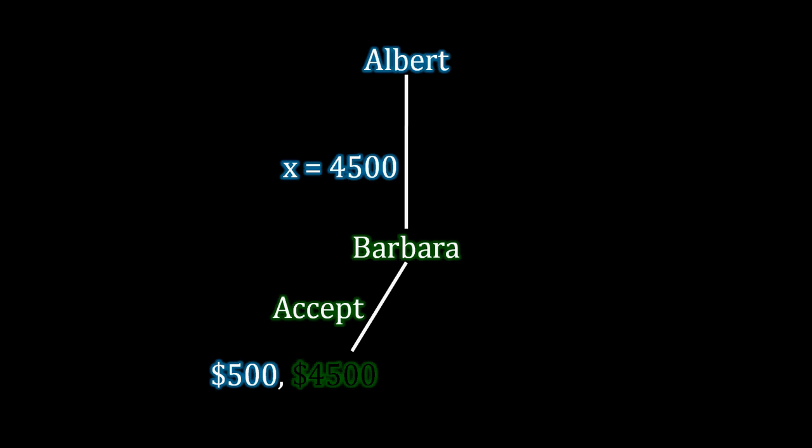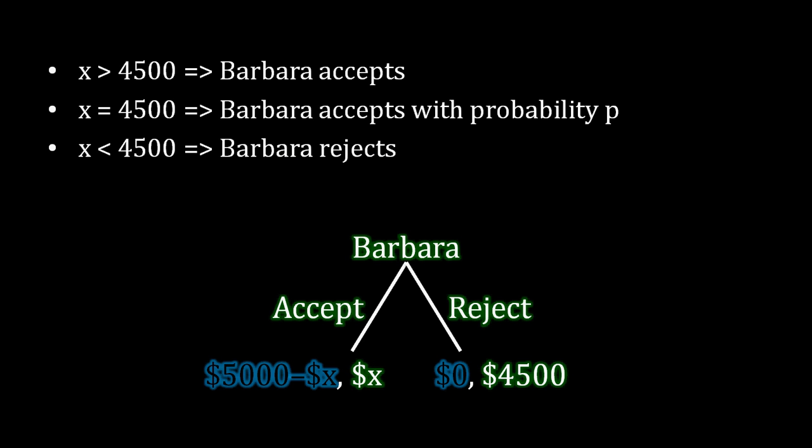Okay, that does not actually take care of everything, unfortunately. When x is exactly equal to $4,500, Barbara is indifferent, and indifference means that she's willing to do absolutely anything. So it might not be the case that she's accepting, and it might not be the case that she's rejecting. It might be the case that she's randomizing between accepting and rejecting. So suppose when x is exactly equal to $4,500, Barbara accepts with probability p and rejects with probability 1-p.